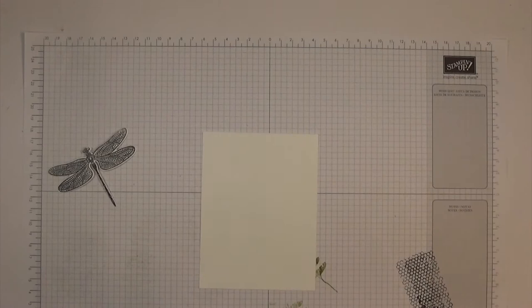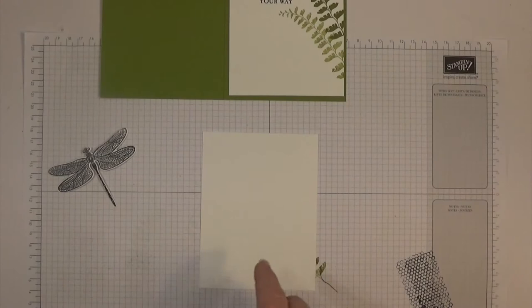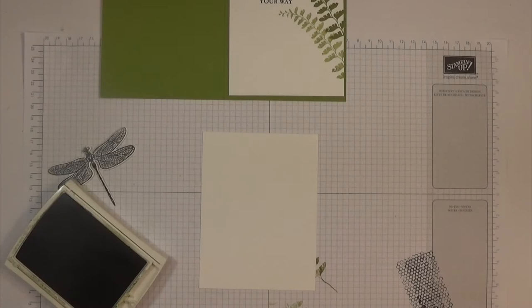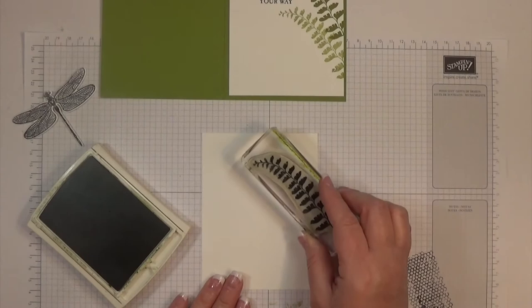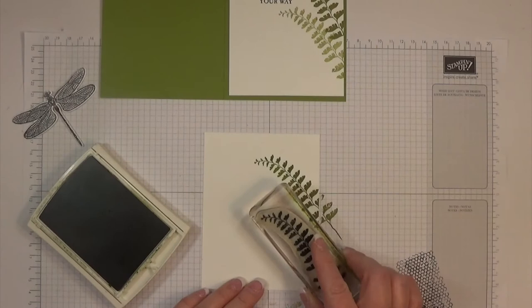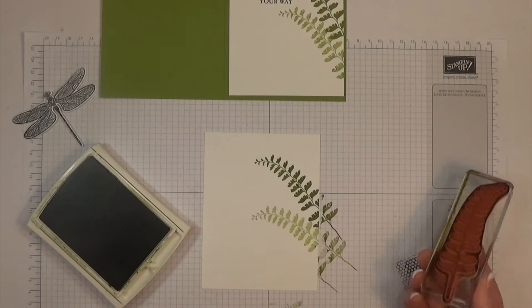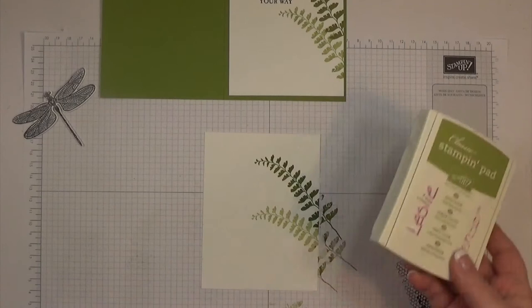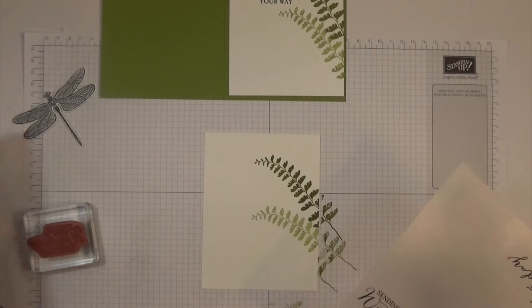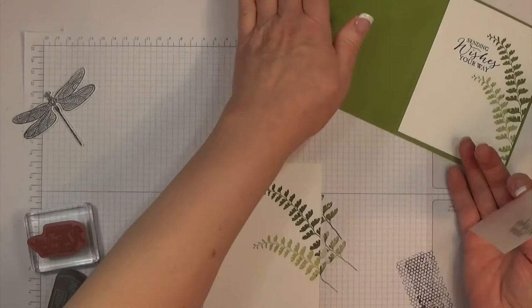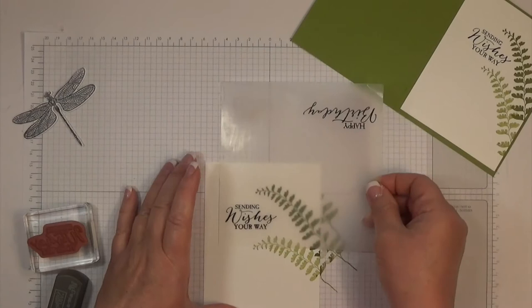While we're letting that dry, I'll stamp the inside of the card. I've again used the Old Olive ink and the foliage. Let's see if this little guy is going to stay on the block today. I'm just going to put it up top so we can leave room for a signature and a little message, and then stamp it again right there, a little lighter.